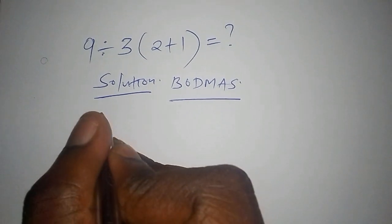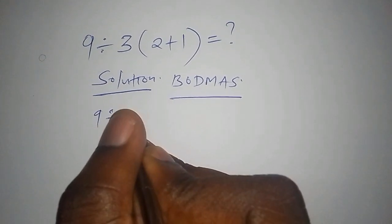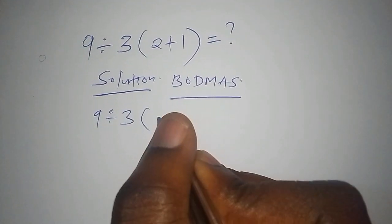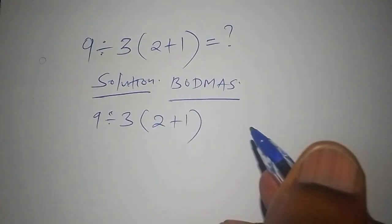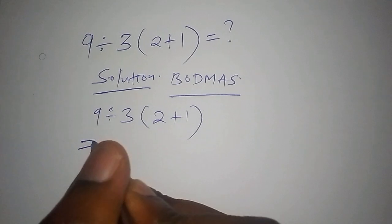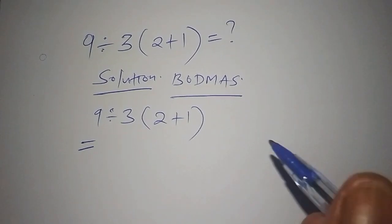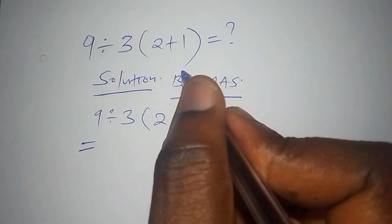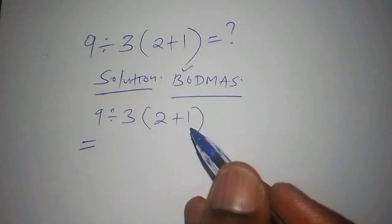We have 9 divided by 3 into bracket 2 plus 1, close the bracket. This equals, so we must first look at the B here, and the B means bracket first.